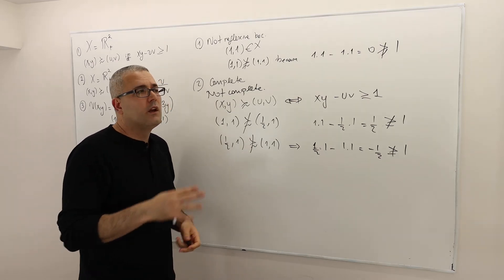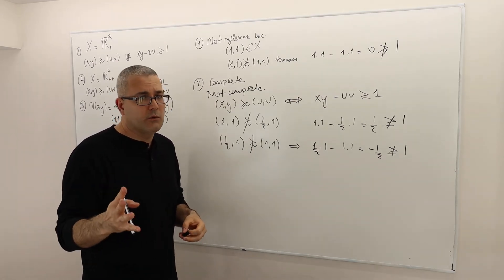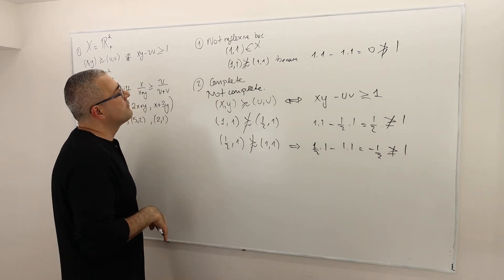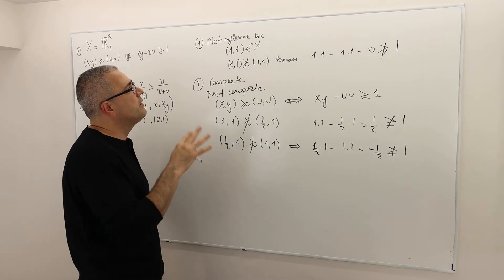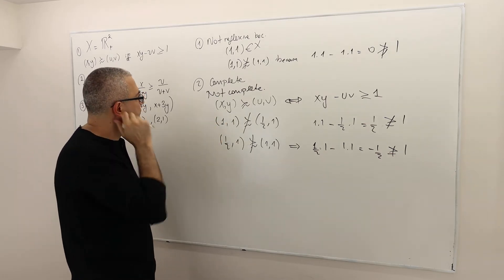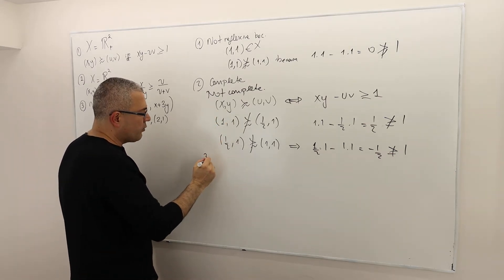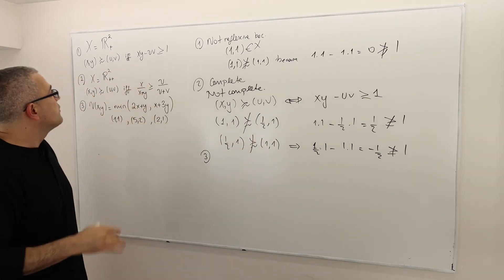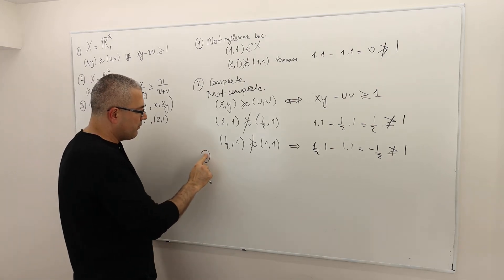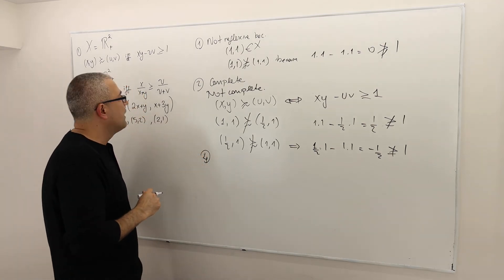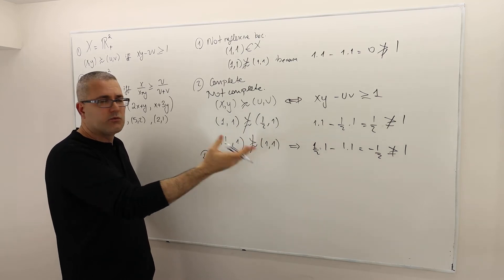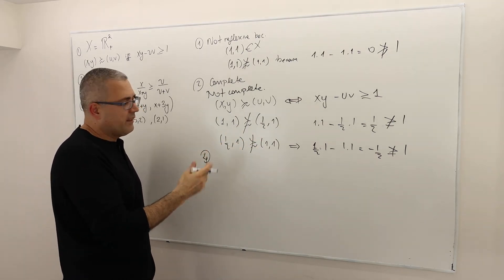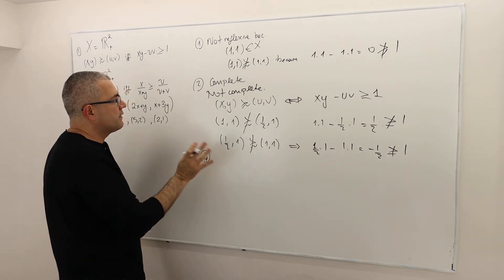Completeness means you should be able to compare any two different bundles. And then the third property is transitivity. I'm not going to go through it, but yes, it is transitive and you can prove it. I'm skipping it because the solution is already there, and I think transitivity is a bit more straightforward given these two.